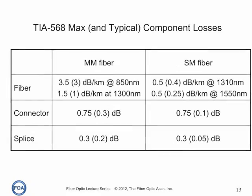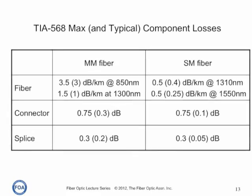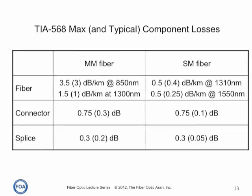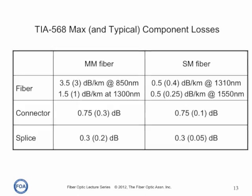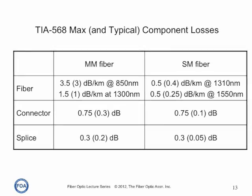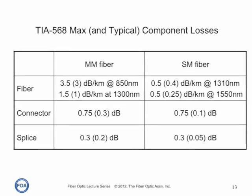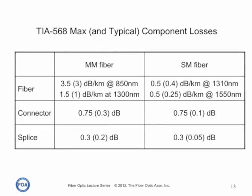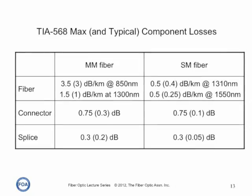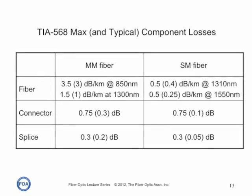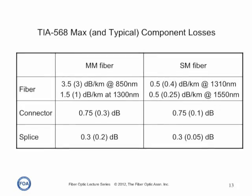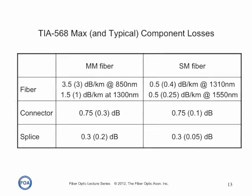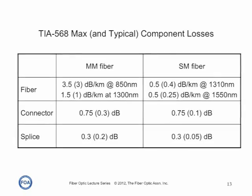Here's a table of maximum losses from the TIA 568 standard and typical component losses. Standards like TIA 568 tend to have higher losses than what we think of as typical, because they're written by manufacturers who want to make sure they consider the worst case losses. When you're doing a loss budget, you have a choice of whether you use a standard loss or a typical component loss, and we'll calculate a loss budget and look at the difference.